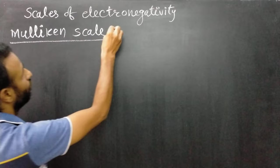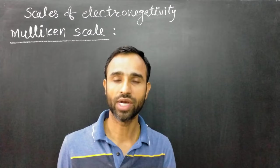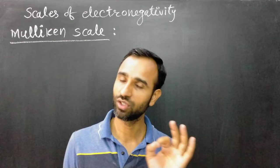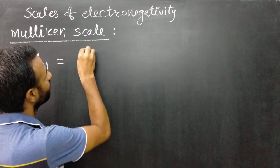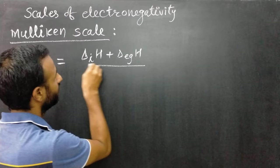What is the Mulliken scale? The Mulliken scale uses the value of ionization enthalpy and electron gain enthalpy — the average of these values. So on the Mulliken scale, electronegativity of an element is equal to ionization enthalpy plus electron gain enthalpy divided by 2.